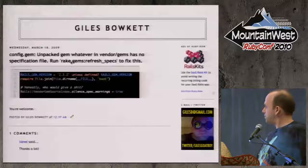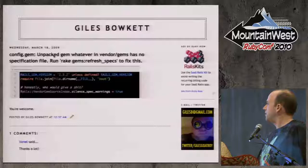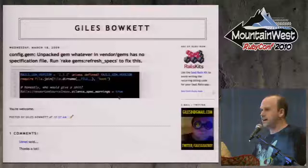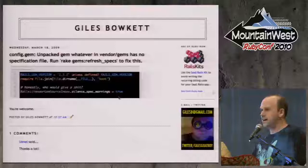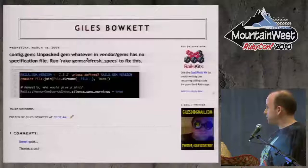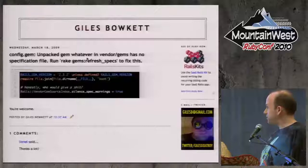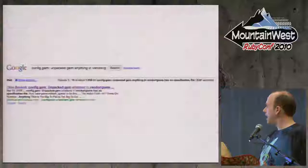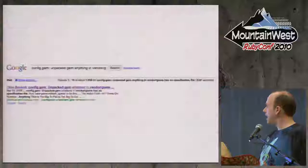But the point is that you're simply associating things with probabilities. So here's one way that this works. I've got this blog post here. It says config.gem unpack, blah blah blah. This is obviously an error message. The whole post title is an error message. And here is the solution. Honestly, who would give a shit? Rails vendor gem source. And if you encounter this cryptic, unhelpful, and deeply annoying error message that does not affect the running of your app in any way, shape, or form, all you need to do is Google it and you get the one-liner solution.